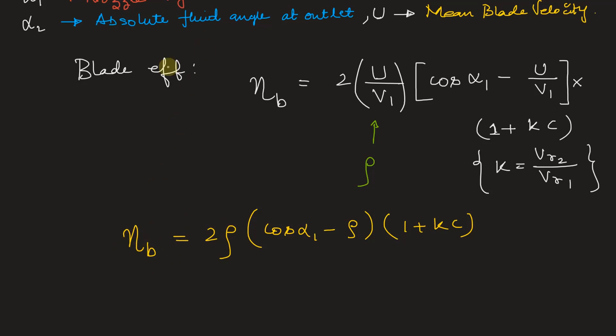All right. So let's differentiate this and we must equate it to zero. So from here, we'll get the value of rho that is rho is equal to cos alpha 1 divided by 2. Now for this value of rho, eta B will be maximum. So let's say this be equation number 1 and this be equation number 2. If we substitute equation number 1 in equation number 2, we get eta B max.